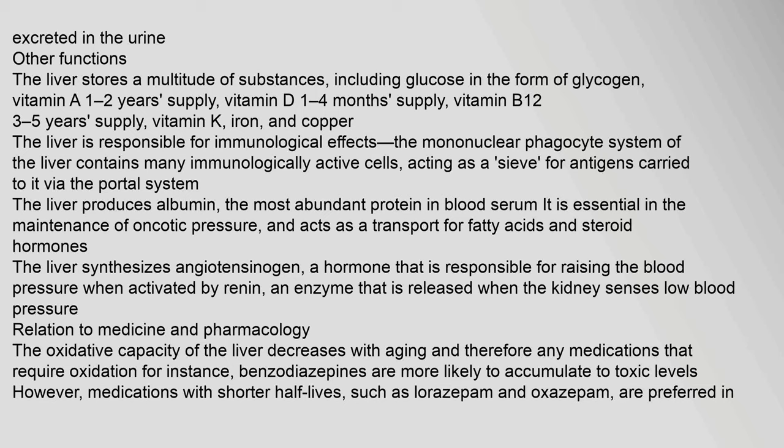The liver stores many substances including glucose as glycogen, vitamin A (1–2 year supply), vitamin D (1–4 month supply), vitamin B12 (3–5 year supply), vitamin K, iron, and copper. The liver has immunological effects through its mononuclear phagocyte system, acting as a sieve for antigens from the portal system. It produces albumin, essential for oncotic pressure and transport of fatty acids and steroid hormones. It also synthesizes angiotensinogen, a hormone responsible for raising blood pressure when activated by renin.